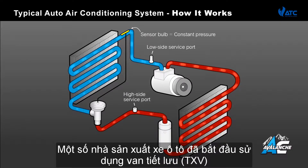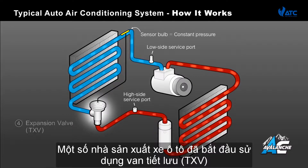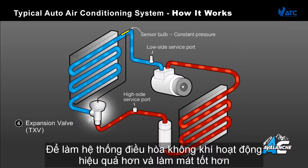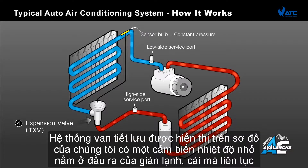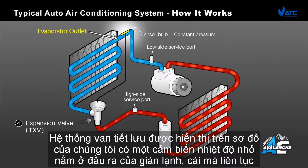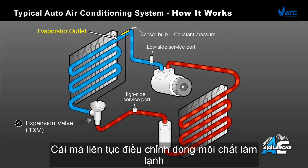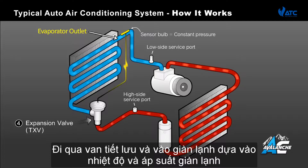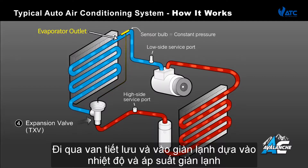A number of car manufacturers started using a thermal expansion valve, or TXV, to make the air conditioner operate more efficiently and give better cooling. The TXV system, as shown in our diagram, has a small temperature bulb located at the outlet of the evaporator, which continually adjusts the refrigerant flow through the expansion valve and into the evaporator based on the evaporator's temperature and pressure.